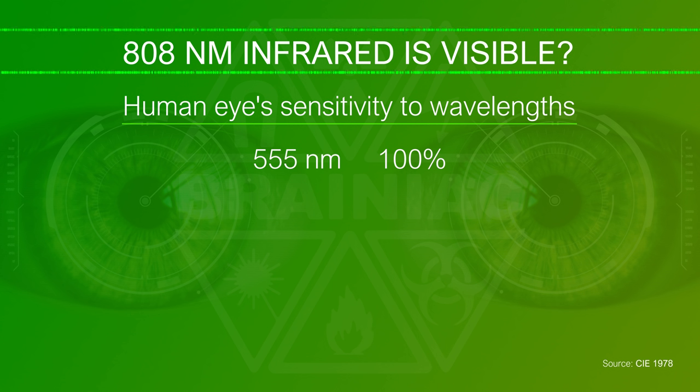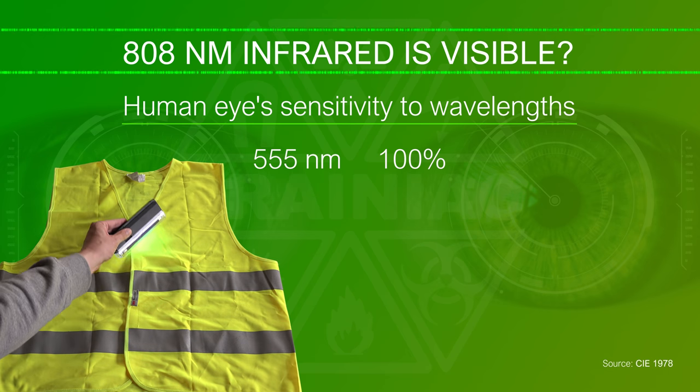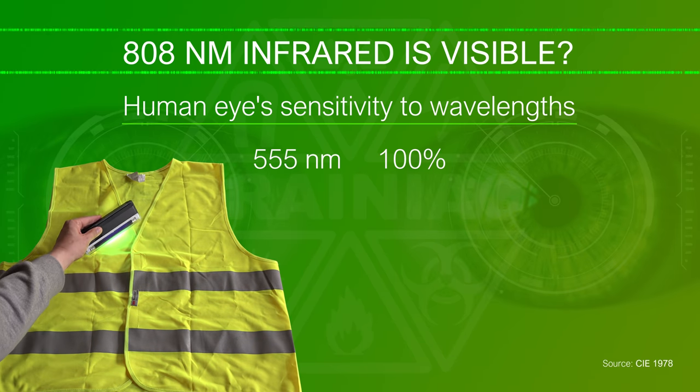555 nm is a yellow-green color you may recognize from high visibility clothing. Our eyes' high sensitivity to yellow-green makes it very visible even at low light. Fluorescence is also part of the brightness from these clothes but that's in a different video.